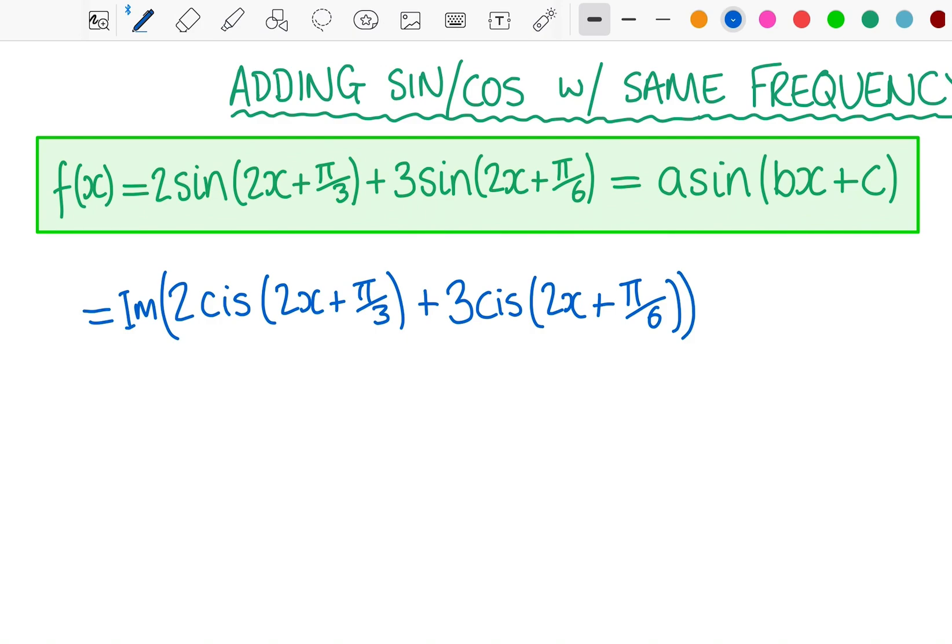How can we add these? Adding polar form complex numbers isn't really particularly easy. We can convert them to Cartesian form, usually, but these aren't just complex numbers. These are complex functions with a 2x inside, so even that isn't really particularly easy to do.